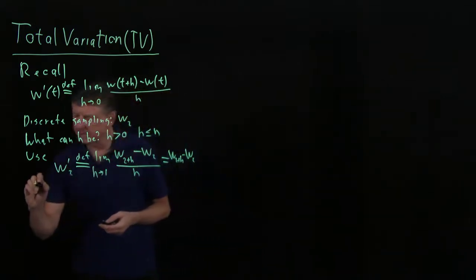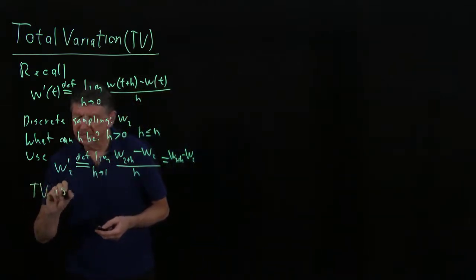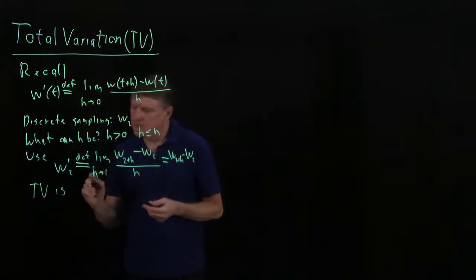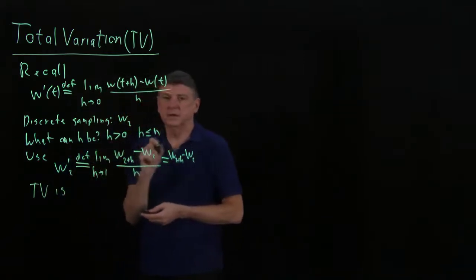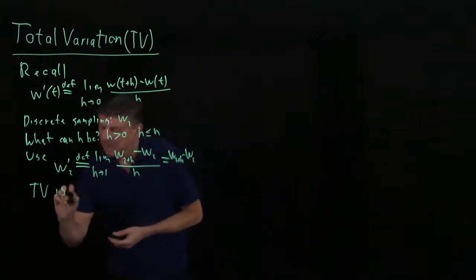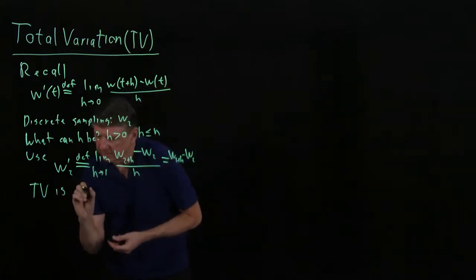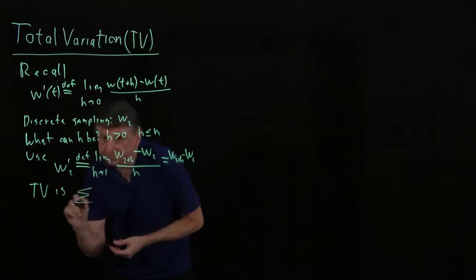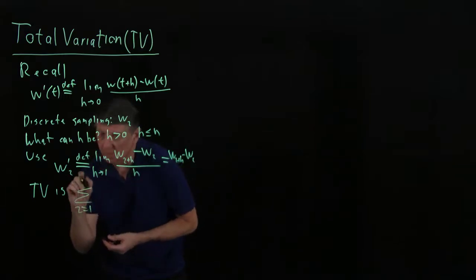So the total variation is this would be, now if we're computing this forward difference, we can only do it for n minus one because we always have to be able to add one, right? So that means that the total variation will be the sum as i goes from one to, now it's n minus one.